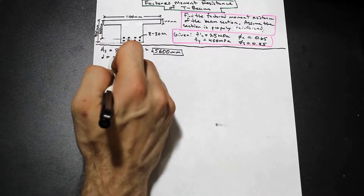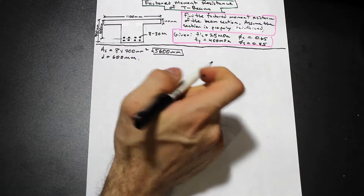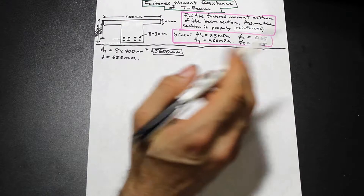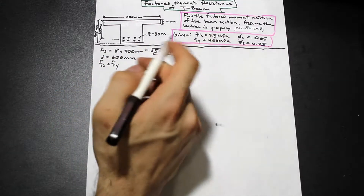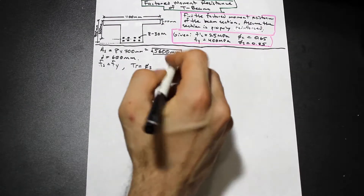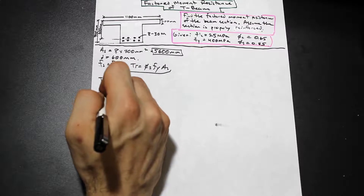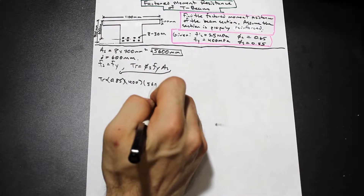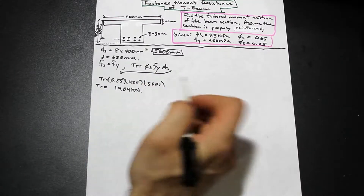The effective depth d is given as 600 mm. Now we need to find Tr, the tension force in the steel. Because the beam is properly reinforced, we can assume fs equals fy. So Tr = φs · fy · As = 0.85 × 400 × 5600, which gives us a Tr value of 1904 kN.